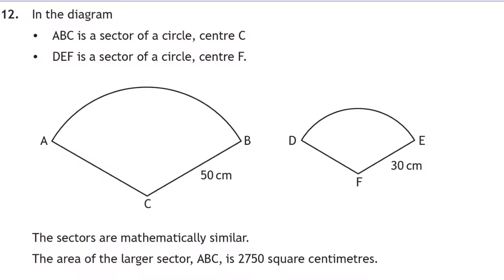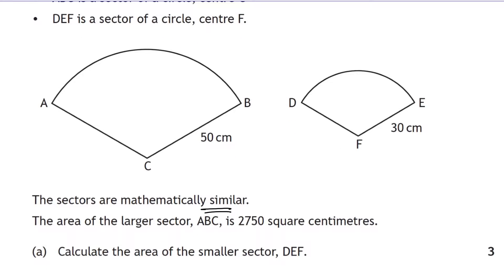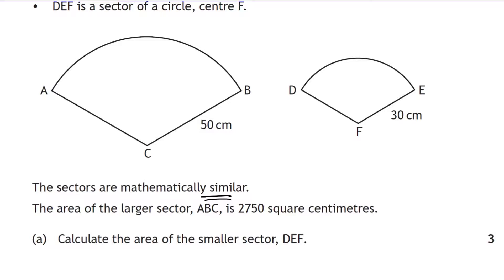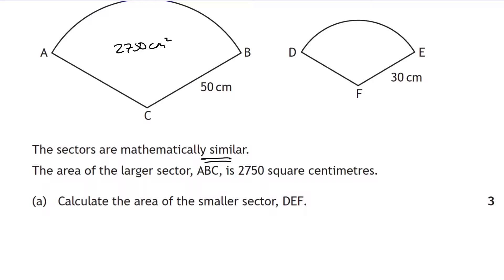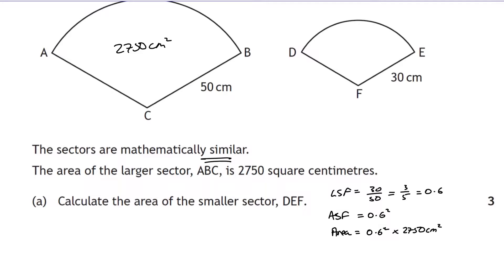Part c involves mathematically similar shapes. The area of the large sector ABC is 2750 cm². The length scale factor is 30/50 = 0.6, so the area scale factor is 0.6² = 0.36. Multiplying 0.36 × 2750 gives 990 cm² for the smaller sector.